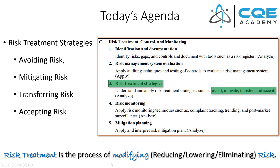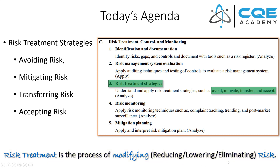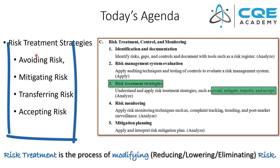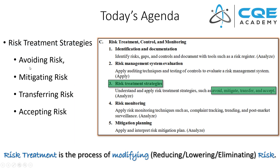What is a risk treatment strategy? Essentially, it's the process of modifying risk — that's kind of a vague term because it could mean the reduction, lowering, or eliminating of risk. There are four specific strategies we're going to cover today: avoiding risk, mitigating risk, transferring risk, and ultimately accepting risk.